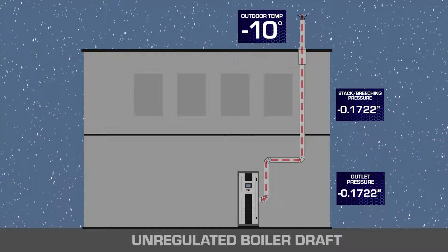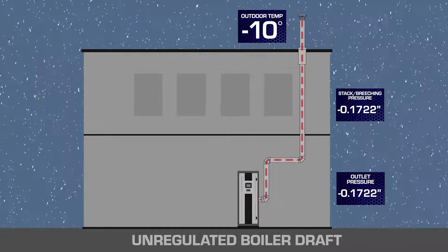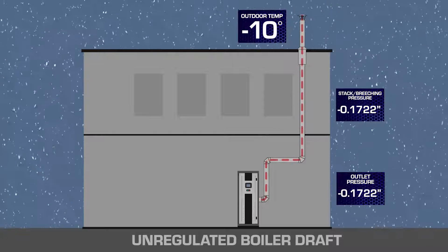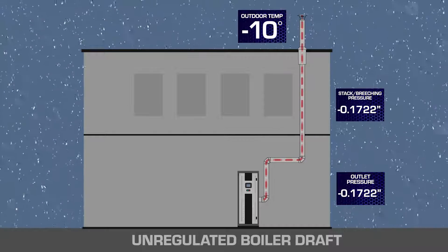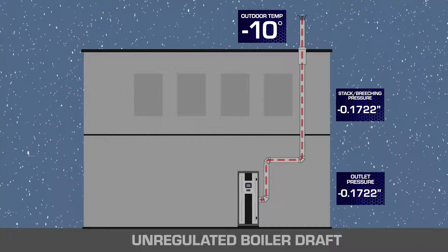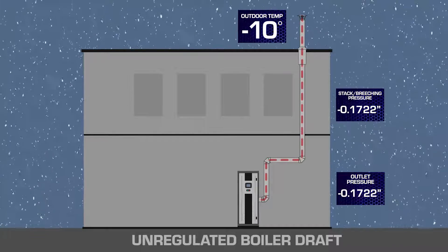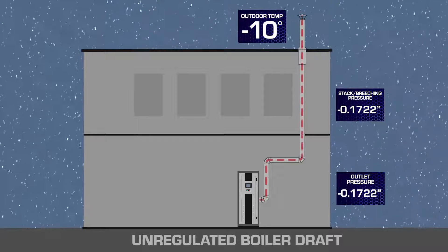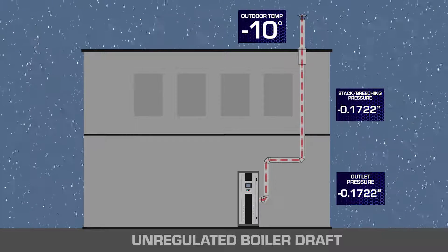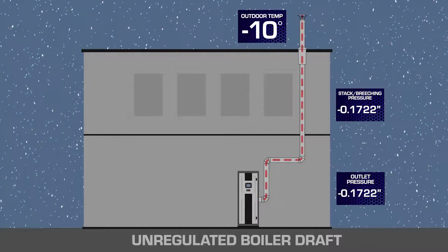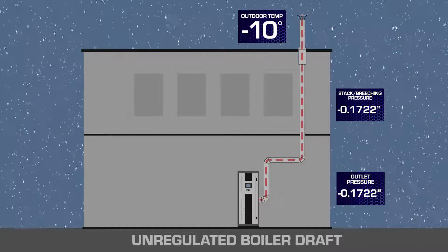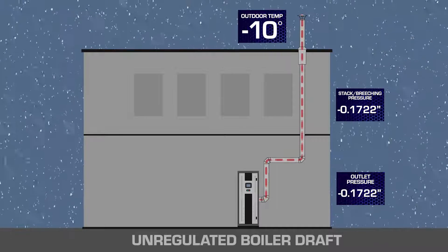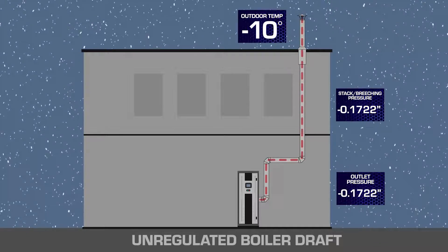Second, we need to make sure we stay inside the appliance's maximum negative outlet pressure range. This is done at a low ambient temperature, maximum draft scenario, and low firing rate. If the appliance outlets go negative, we are now in Category 2 operation, which means loss of efficiency and flame instability.